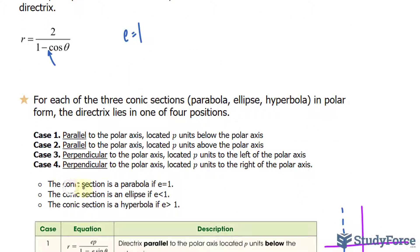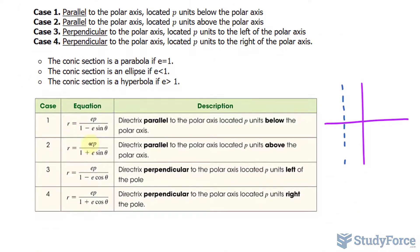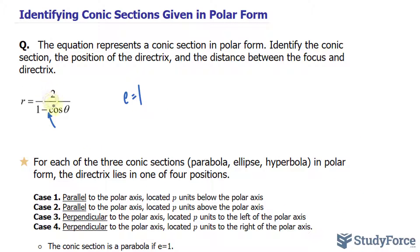And that's outlined right here, where if it is equal to one, we have a parabola. Looking back at the standard form, we have e, p at the top, and that's represented by two. So we have two is equal to e, p.